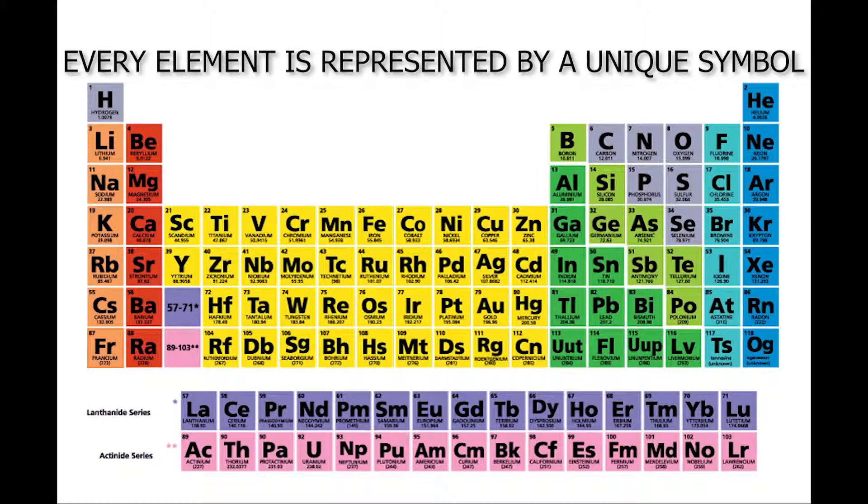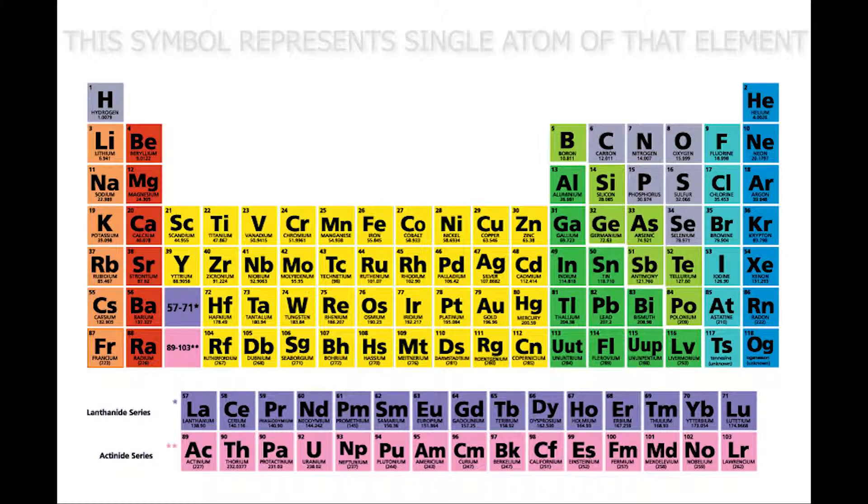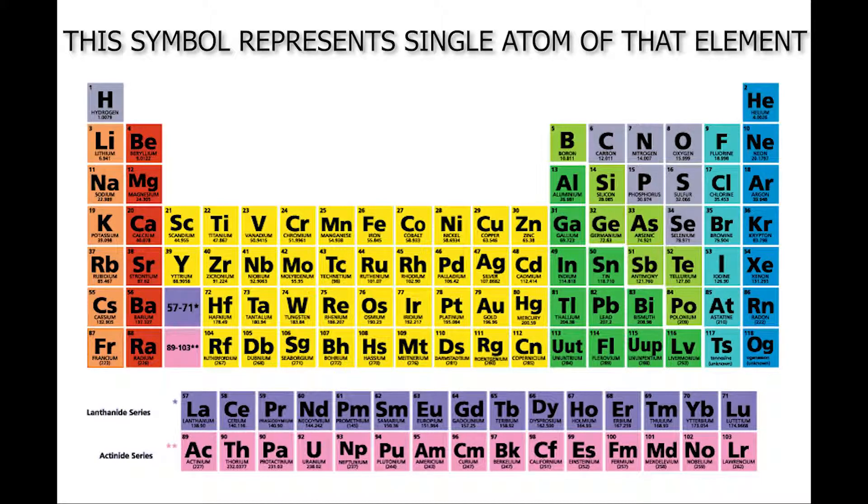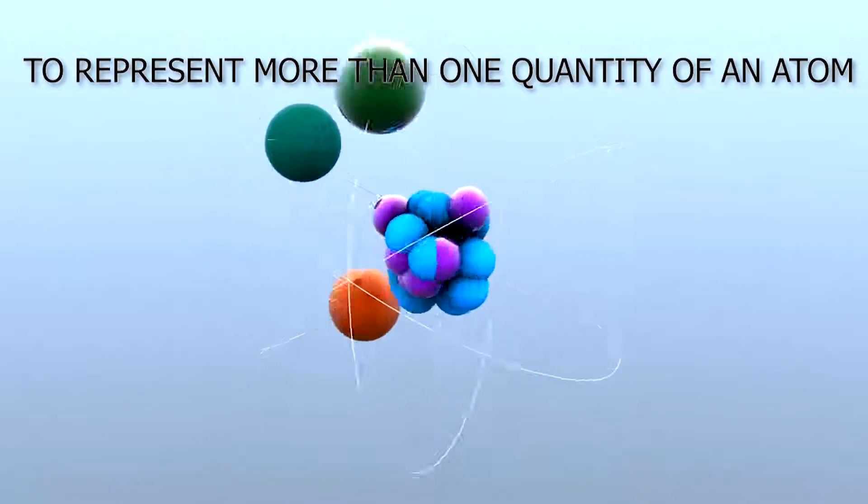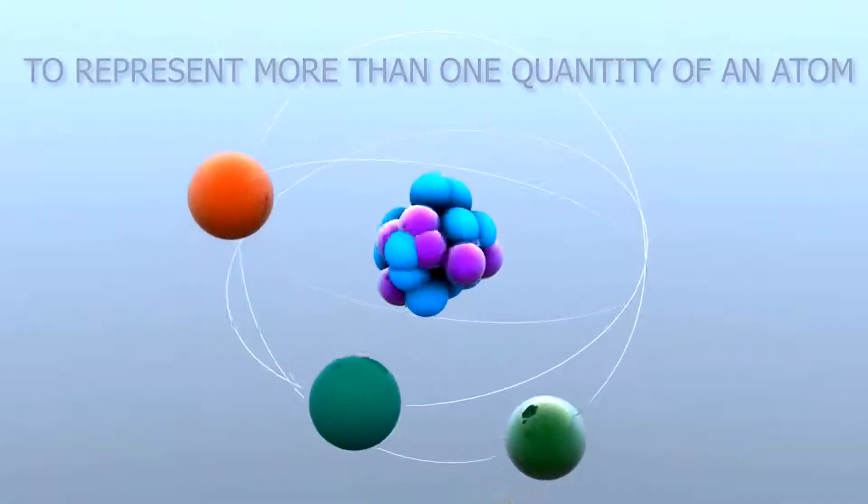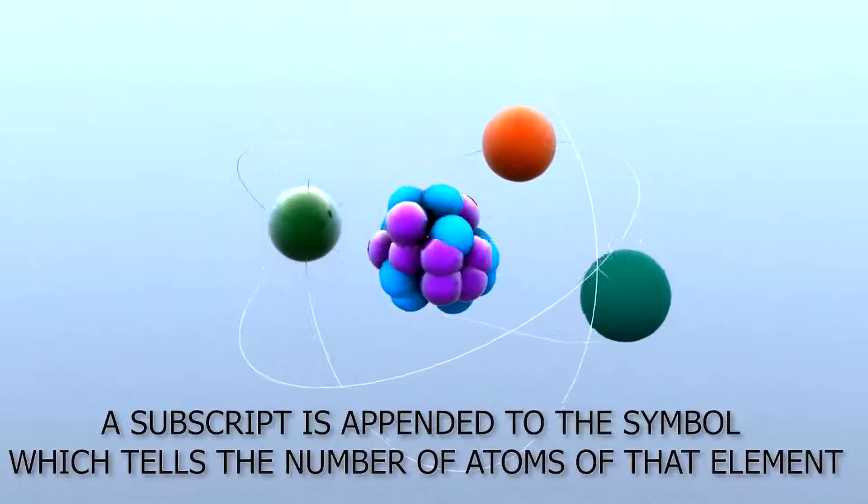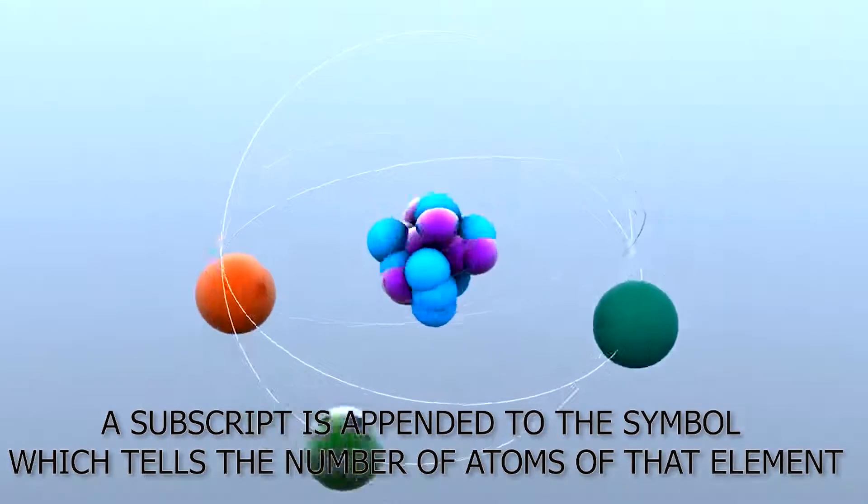We know that every element is represented by a unique symbol, and this symbol represents a single atom of that element. To represent more than one quantity of an atom, a subscript is appended to the symbol which tells the number of atoms of that element.